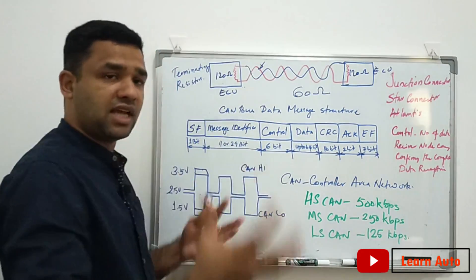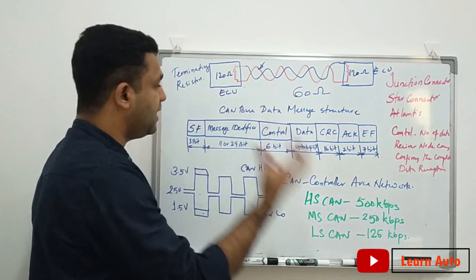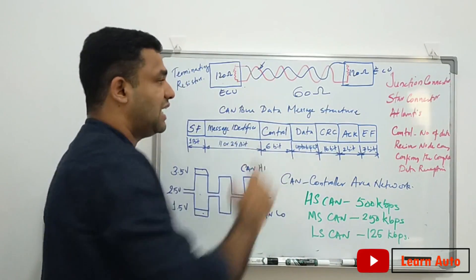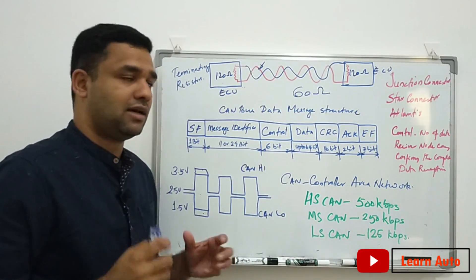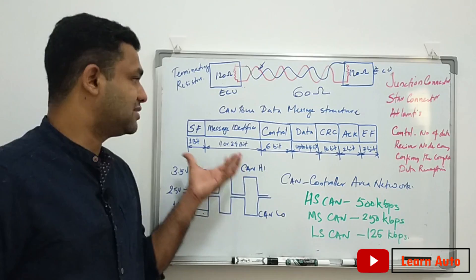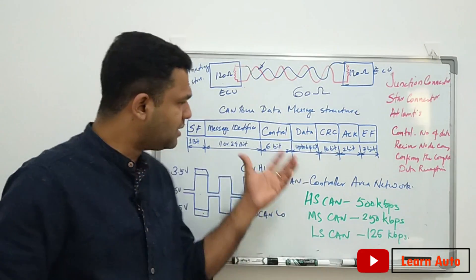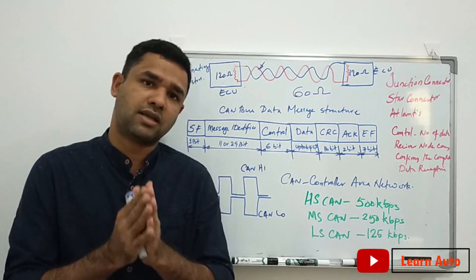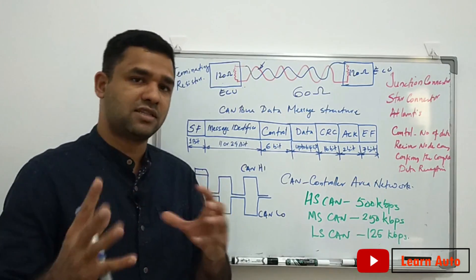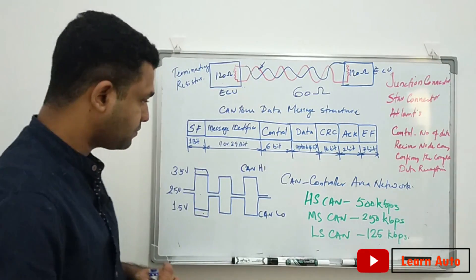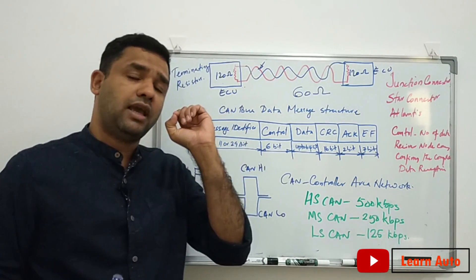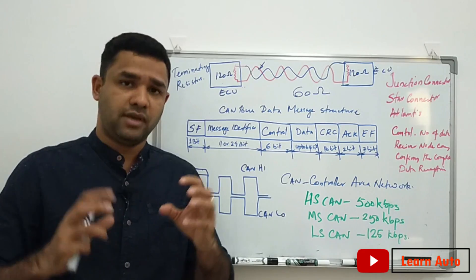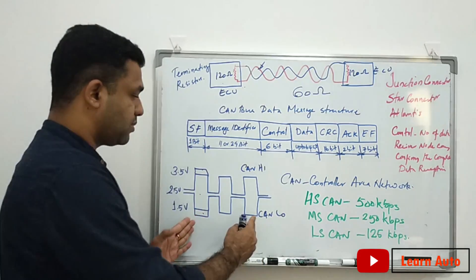This is the message — what message is going to be transferred to the data. It is a CAN data message structure. Now we can analyze the oscilloscope data.